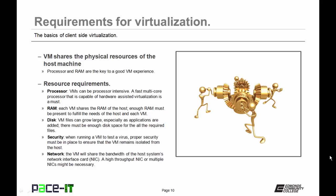So let's talk about some of those requirements. For the processor, VMs can be processor intensive, so you should try and have a fast multi-core processor. And it does need to be capable of hardware-assisted virtualization.